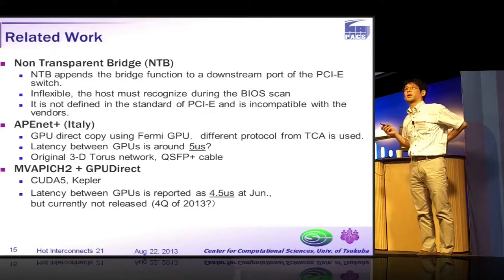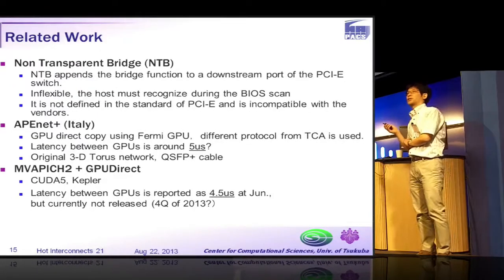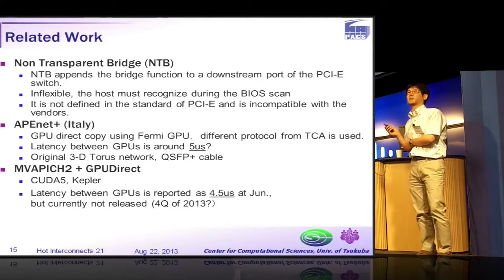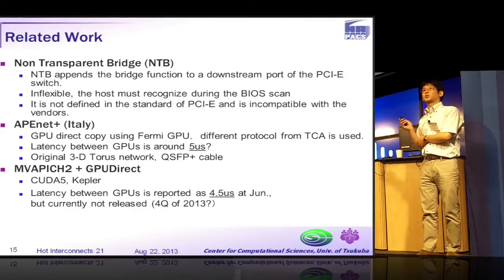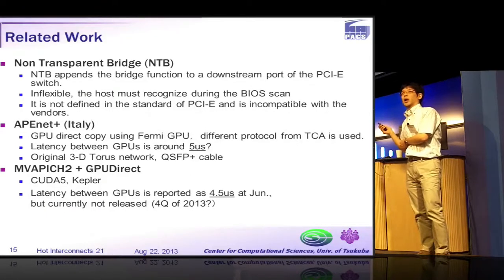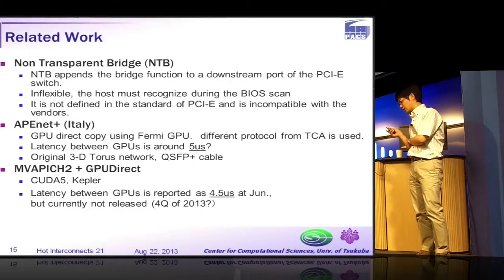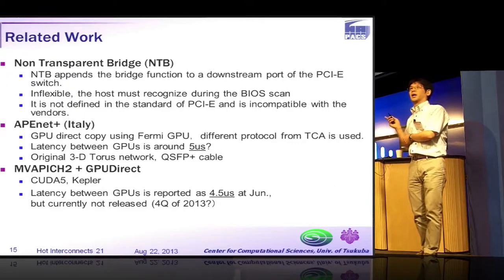Our approach is very similar to a non-transparent bridge in a PCI Express switch, but NTB is not defined in the PCI Express standard and is very inflexible to use. MPI with GPU Direct is also very similar to our approach, but they reported 4.5 microseconds for GPU-to-GPU communication. Our approach is better — about twice as good — compared to that.